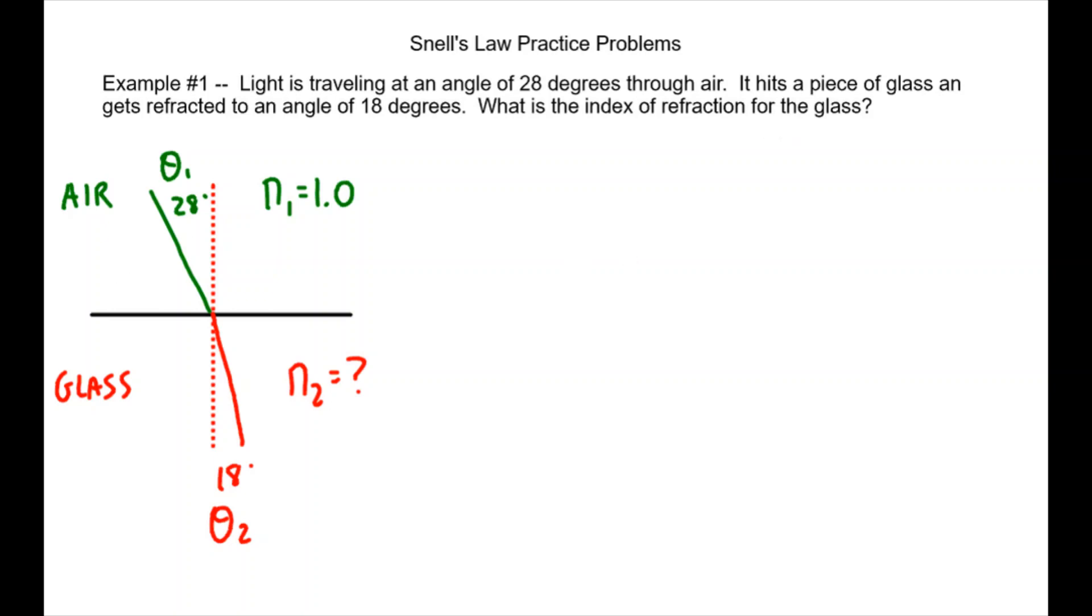It says what is the index of refraction for the glass? So we're going to use Snell's law. Snell's law is n1 sine θ1 equals n2 sine θ2. We're going to fill in the information from the top medium, so n1 is 1 and then the sine of 28 would be angle 1. n2 is what we're looking for, so we're just going to leave that blank as n2, and then the sine of 18 is the angle that it's coming out at.